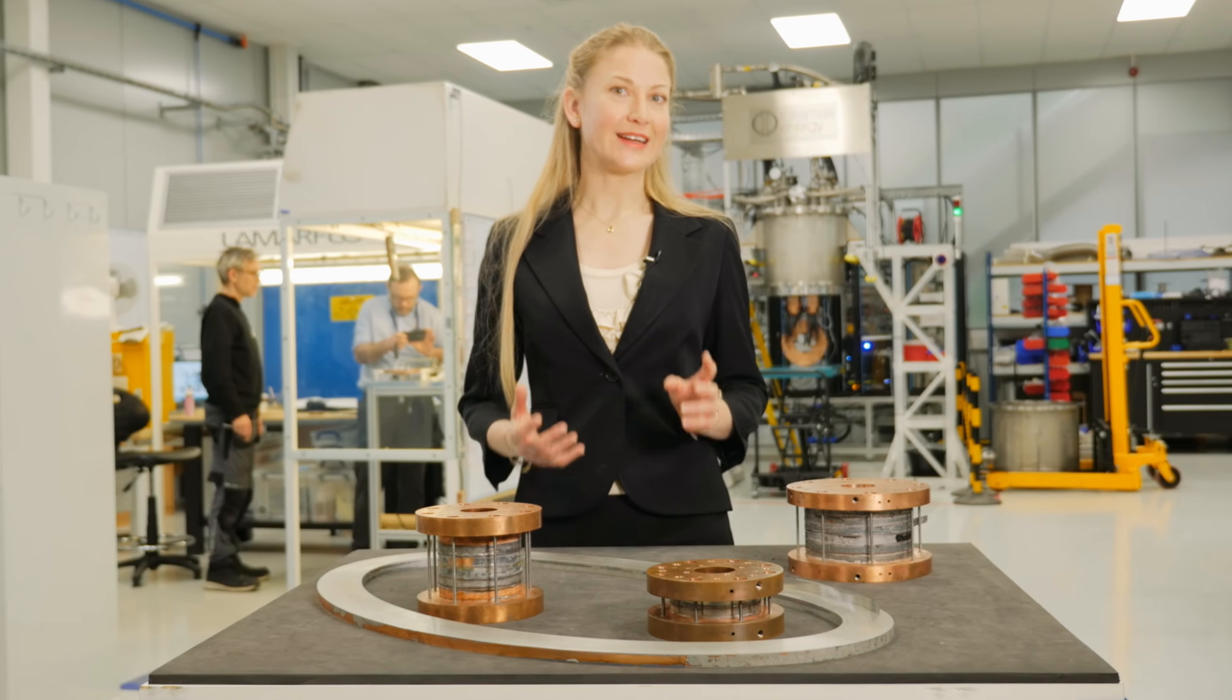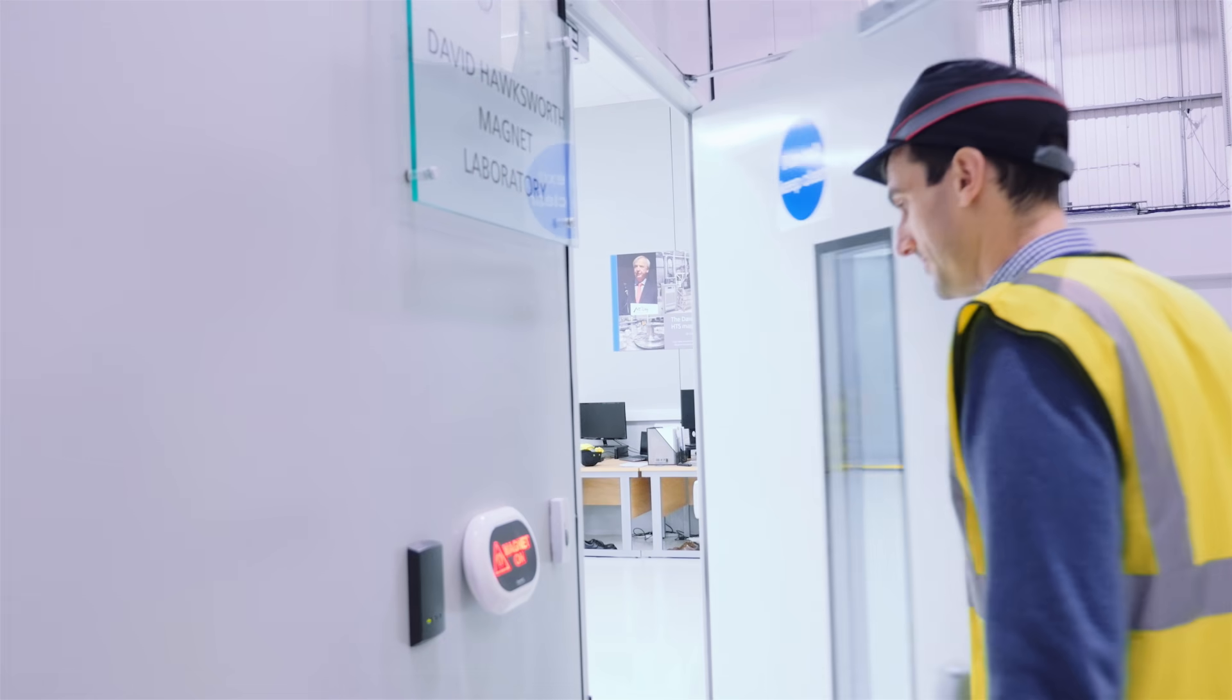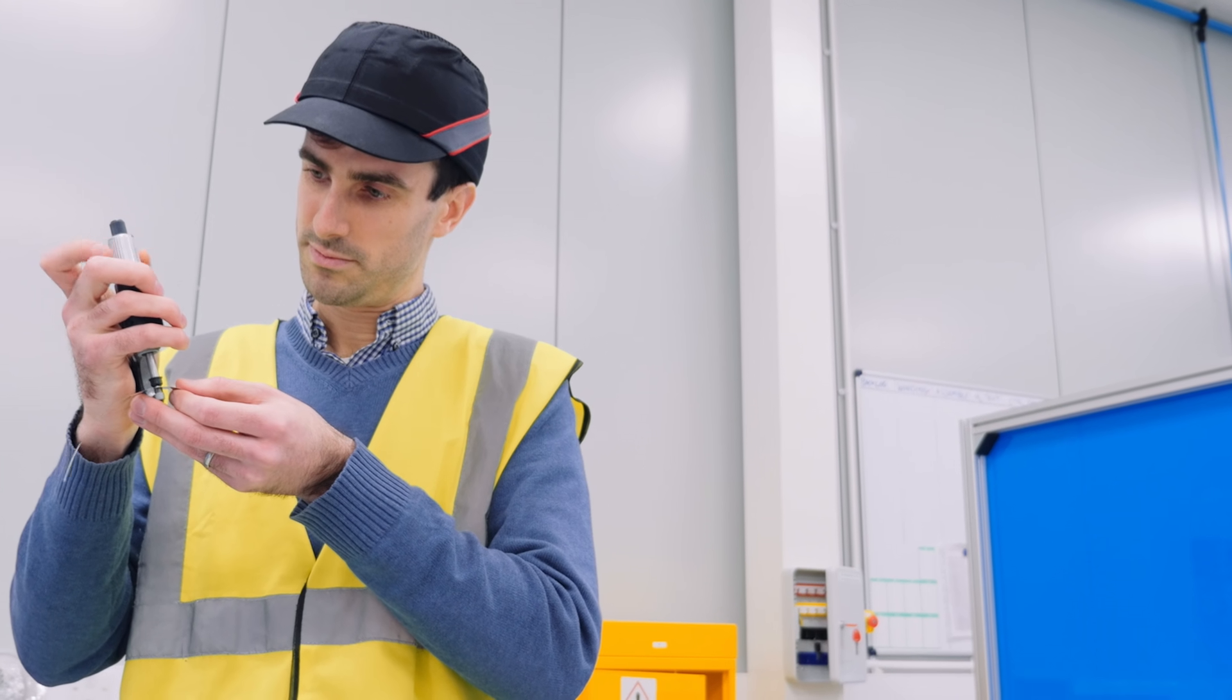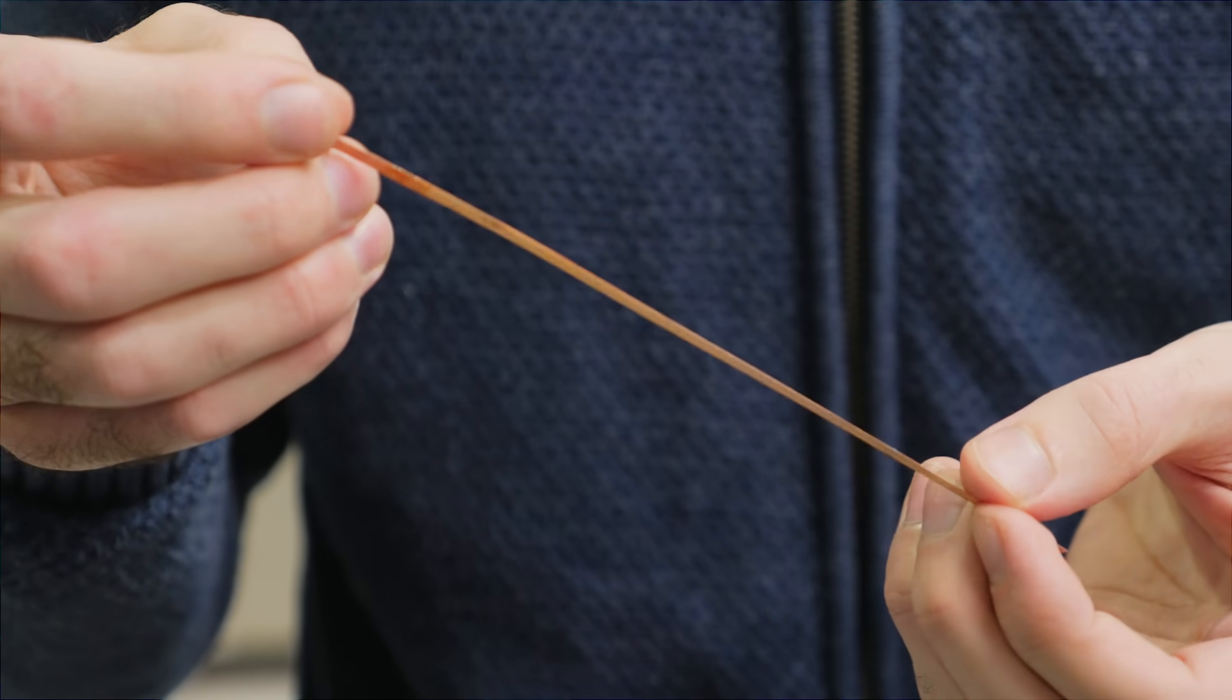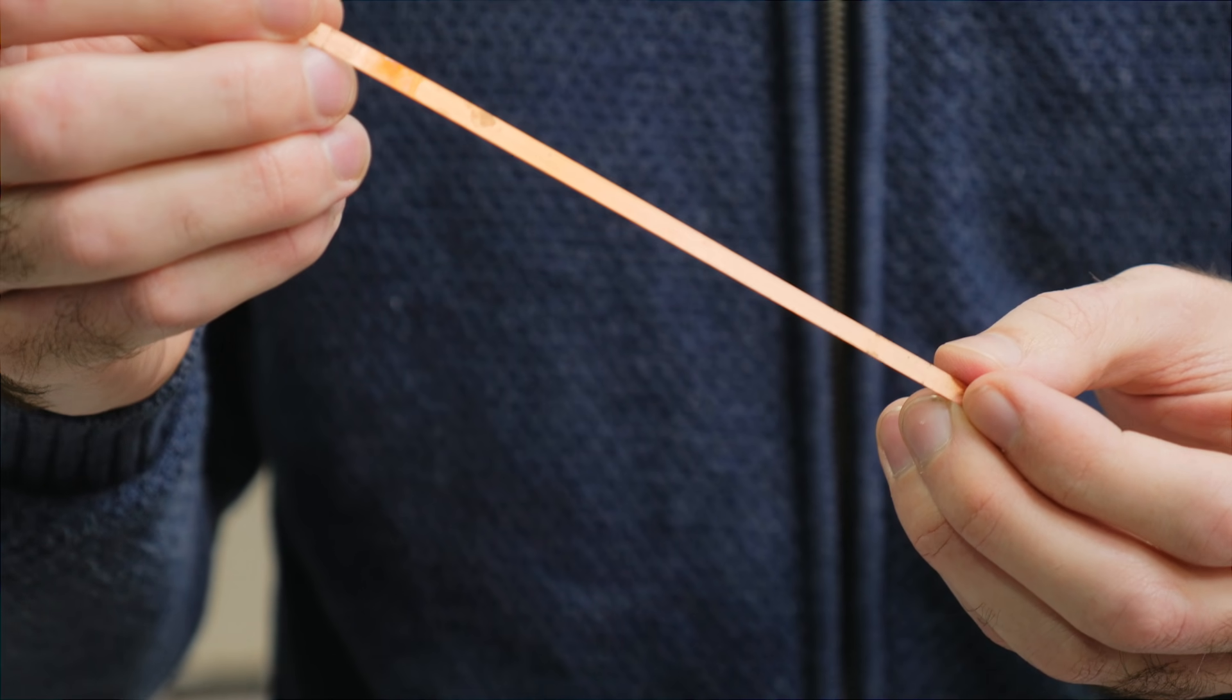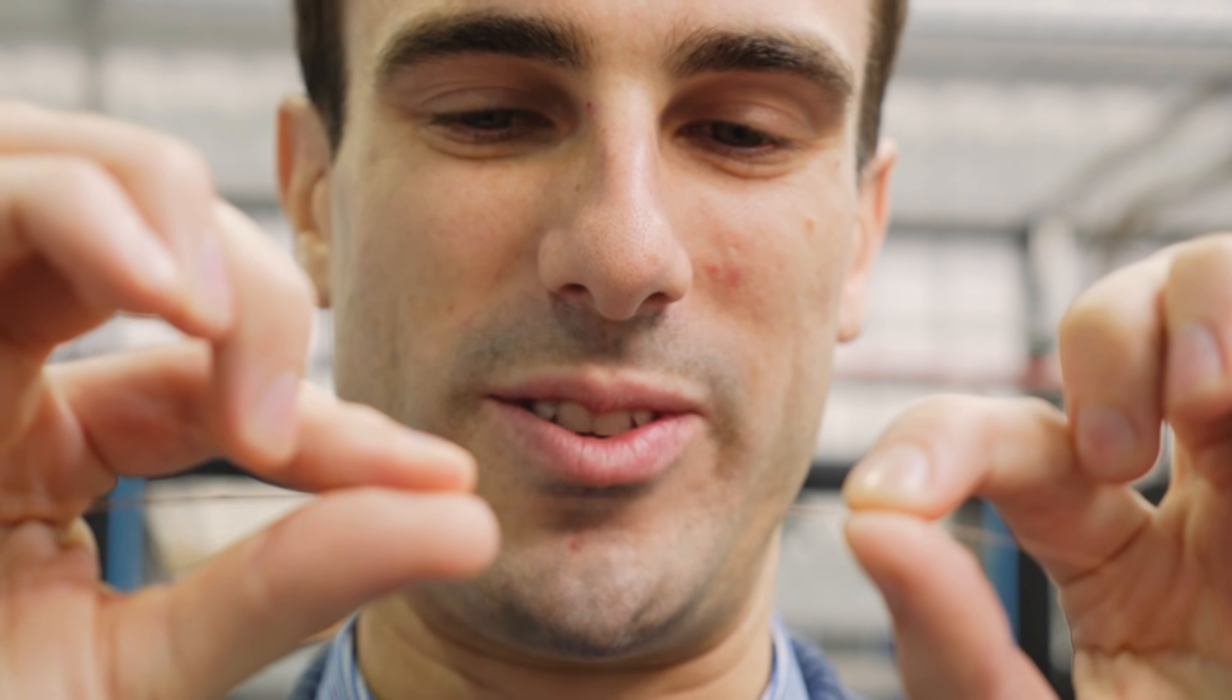They're also able to remain superconducting when they themselves are in a strong magnetic field. My name is Greg Brittles and I'm a senior magnet engineer here at Tokamak Energy. So this is a sample of tape. The tape is only 0.1 millimeters thick and it contains a one micron thick layer of the superconductor that carries all of the current.